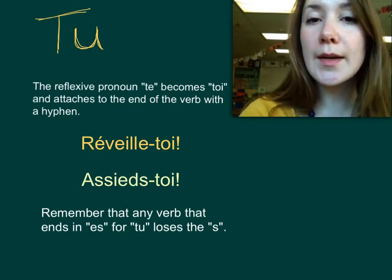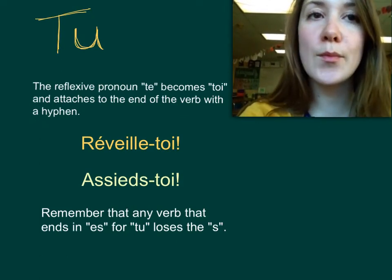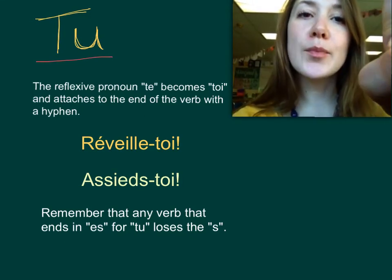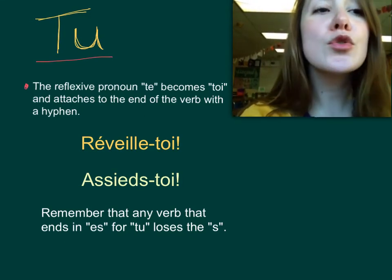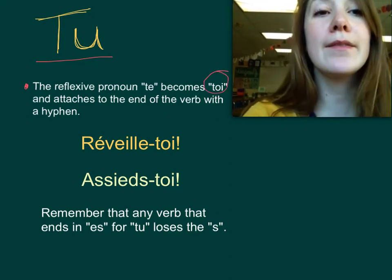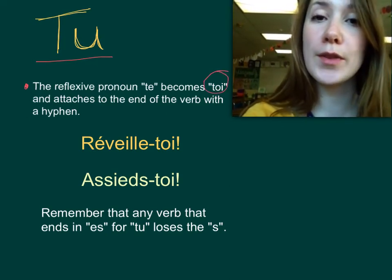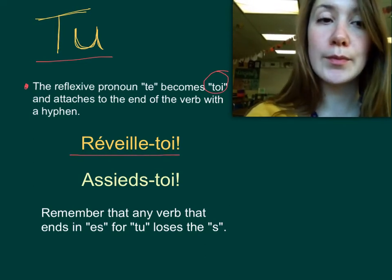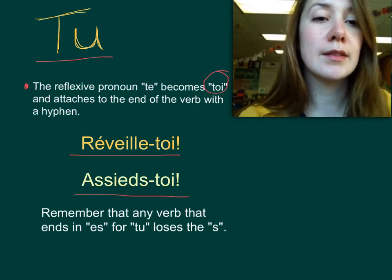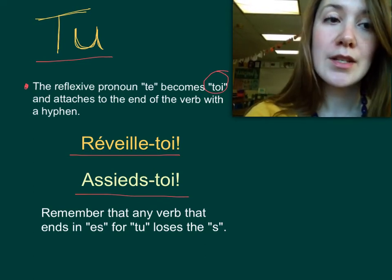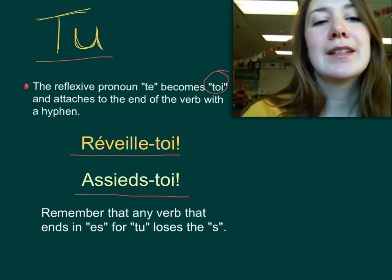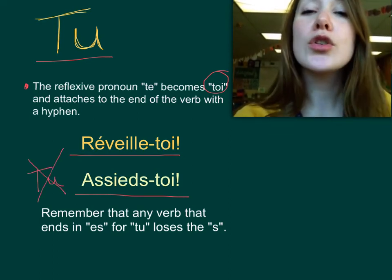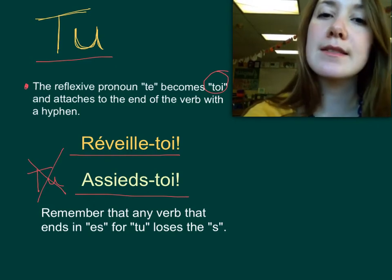If we're giving a command or making a suggestion to someone who we would call tu, it changes a little bit. The reflexive pronoun tu becomes toi, and it also attaches to the end of the verb with a hyphen. For example, réveille-toi — wake up. Or assieds-toi — sit down. We don't say tu assieds-toi; we don't use our subject pronoun, because we don't say 'you sit down,' we just say 'sit down.'